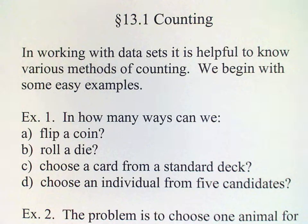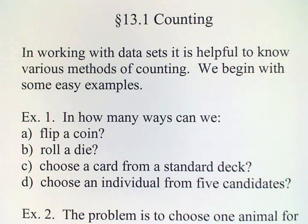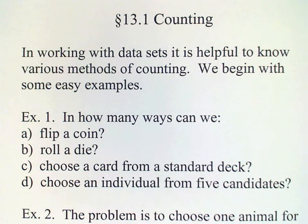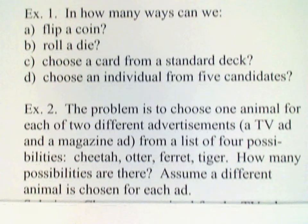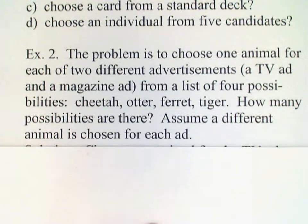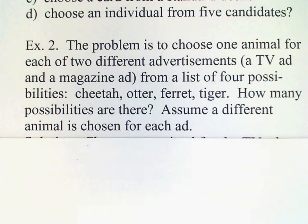Now let's look at an example that is a little less trivial. We have, in this problem, four animals that we can choose from: the cheetah, the otter, the ferret, and the tiger. And we want to choose one of these animals for each of two different advertisements — a TV ad and a magazine ad. So then, how many different possibilities are there?